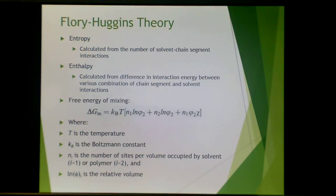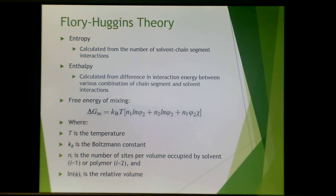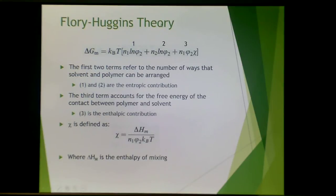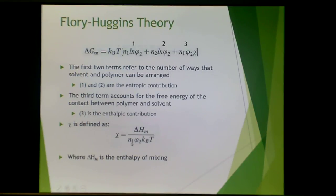The free energy of mixing equals Boltzmann's constant times temperature times these terms. n_i is the number of sites per volume occupied by solvent (i=1) or polymer (i=2), and the natural log gives the relative volume. The first two terms in Flory-Huggins theory refer to the entropic contribution — the number of ways solvent and polymer can be arranged. The third term accounts for the free energy of contact between polymer and solvent and is the enthalpic contribution. Chi (χ) is defined as the enthalpy of mixing over Boltzmann's constant times temperature, for the particular interaction between solvent and polymer.